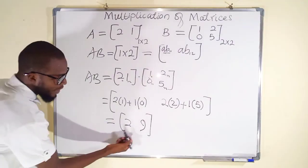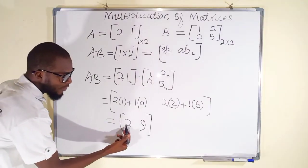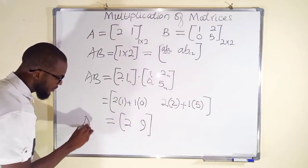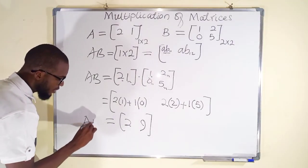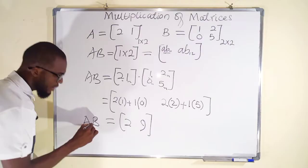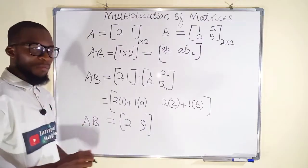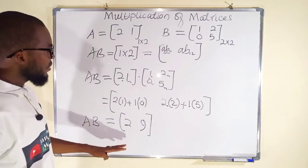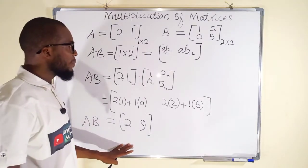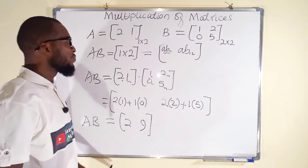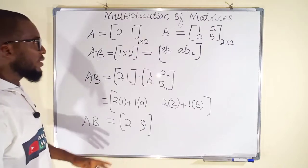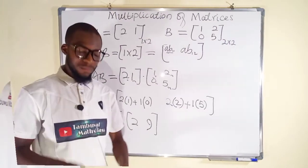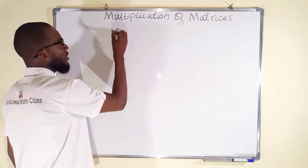So we have only two elements: 4 and 9, which is the result after multiplying A and B together. This is how to multiply matrices. Let us take further examples.